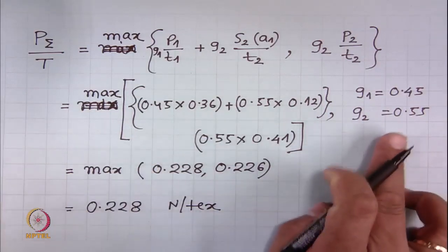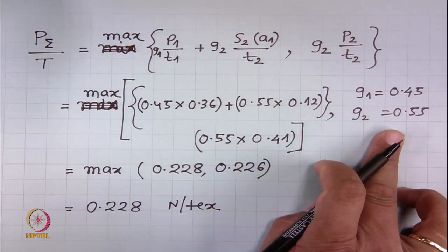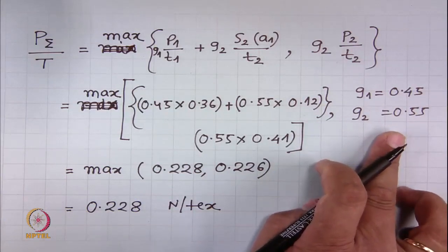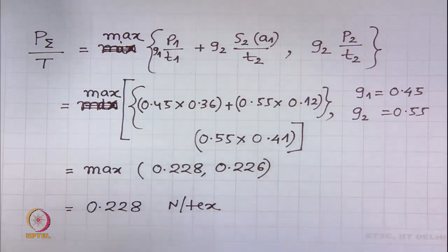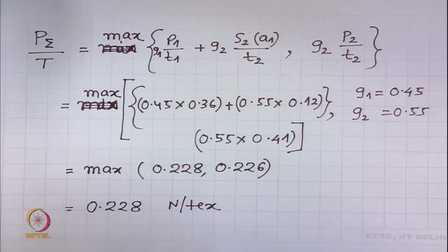The bundle consisting of 45 percent cotton fibers and 55 percent polyester fibers shows minimum strength. The minimum strength is 0.228 Newton per tex. This is the answer to the second part of the problem.